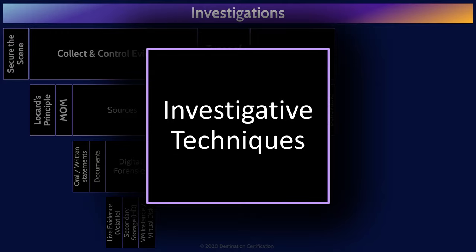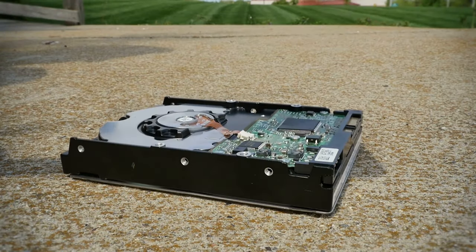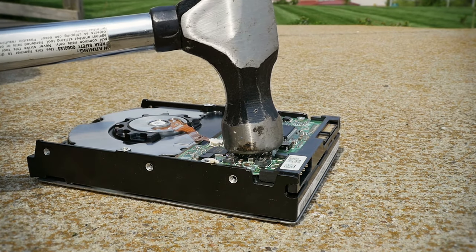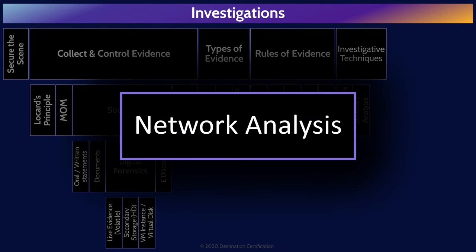What are some of the techniques we can use to analyze the evidence we have collected? Media analysis, often referred to as computer forensics, is examining physical media for evidence such as hard drives. Media analysis includes trying to recover data from a hard drive that someone has drilled a hole in, put in the microwave, or used with a hammer. Software analysis, also referred to as software forensics, is examining software such as malware to determine what it was designed to do — for example, encrypt files for ransomware or exfiltrate credit card numbers. An important part of software analysis is attribution — carefully analyzing the code to identify who authored the software. Network analysis is examining network traffic and log files to identify how an attacker initially gained access to the network, how they traversed the network, what they gained access to, and what they compromised.